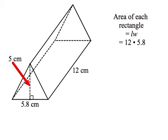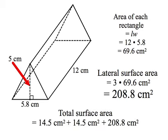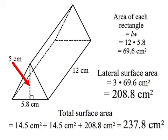Now let's find the lateral surface area. Each rectangle is 12 by 5.8, or 69.6 square centimeters. There are three of those rectangles, so the lateral surface area is 208.8 square centimeters. Adding the area of each triangle — 14.5 square centimeters — to the lateral surface area, the total surface area is 237.8 square centimeters.